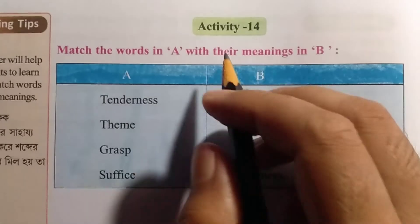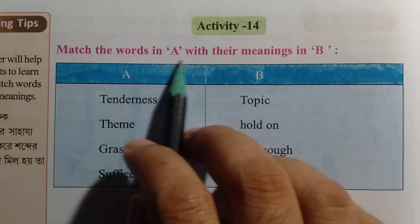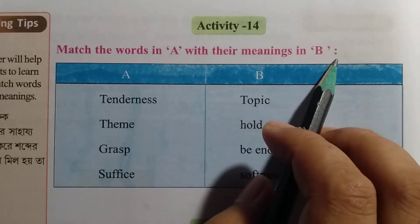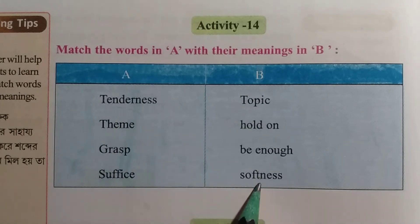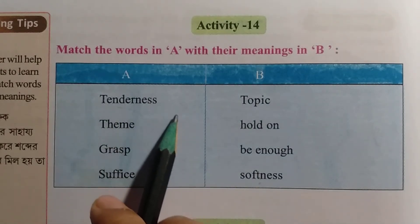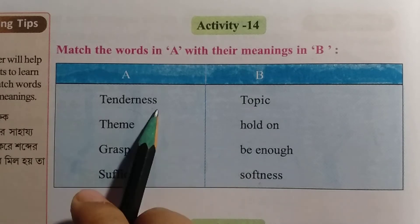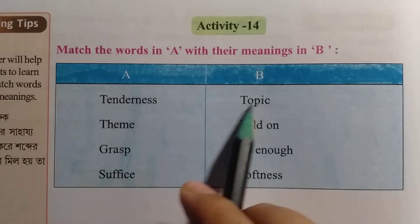Activity 14: Match the words in column A with their meanings in column B. Tenderness means tenderness and softness. Theme means topic.